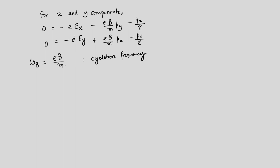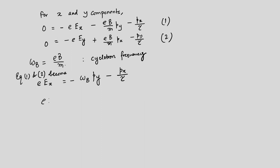Once we define ω_B, we can simplify and write the equations as: (equation 1) eE_x = −ω_B p_y − p_x/τ, and (equation 2) eE_y = ω_B p_x − p_y/τ. This is a coupled system where E_x depends on both p_y and p_x, and E_y also depends on both p_x and p_y.